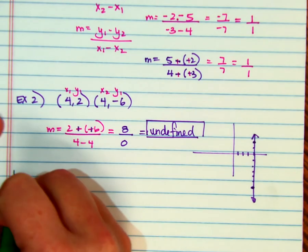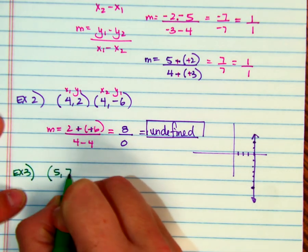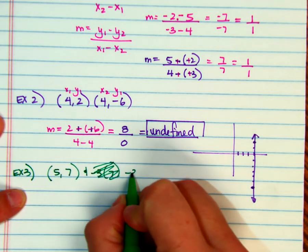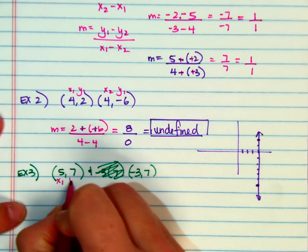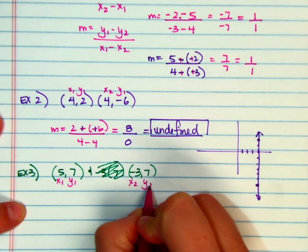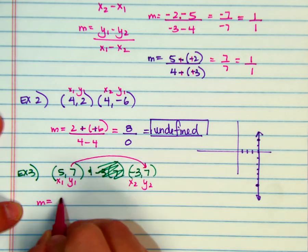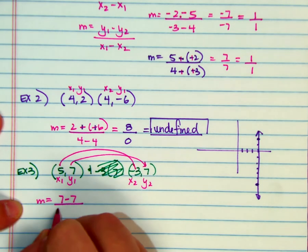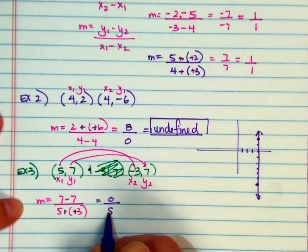So let's do another one, example 3, and let's do the ordered pairs of 5 and 7, and negative 3 and 7. So again, using the slope formula, x sub 1, y sub 1, and x sub 2, y sub 2. So 7 minus 7 over 5 minus a negative 3. 7 minus 7 is 0, or excuse me, minus a negative is plus a positive, and that gives me 8.